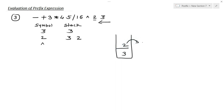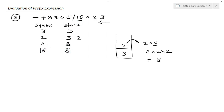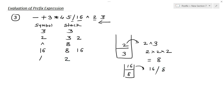We pop the first operand and then the second. So 2 exponential 3 — that means 2 into 2 into 2 — equals 8. Now the next symbol is 16, so 16 goes into the stack; we have 8 already. The next symbol is division. In the stack we have 8 and 16. We pop 16 first and then 8, so 16 divided by 8 equals 2.